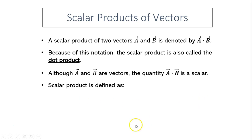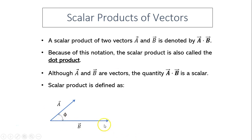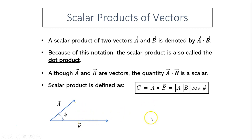So how do we figure out a scalar product? Here is vector A and B, and the angle between those two is phi. To figure out A dot B, here is the equation: A dot B equals the magnitude of A times the magnitude of B times cosine phi.